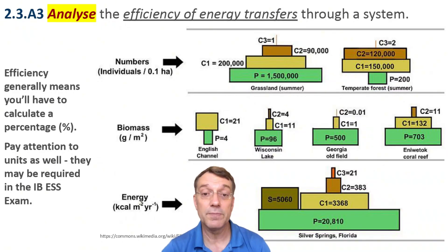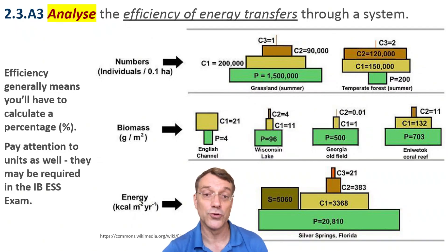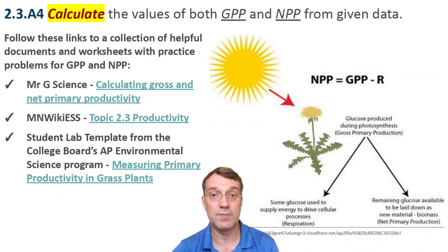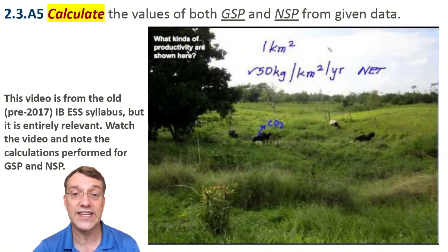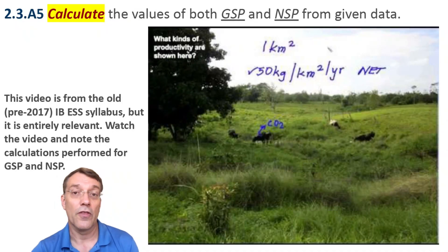Analyzing the efficiency of energy transfer typically requires calculating percentages. These ecological pyramids show how biomass and energy decrease at higher trophic levels. In the energy pyramid, only 16% of producer energy reaches primary consumers at the next level. To calculate gross primary productivity and net primary productivity — GPP and NPP — use the formula NPP = GPP minus R. Gross secondary productivity and net secondary productivity can also be calculated: GSP equals food eaten minus fecal loss, and NSP equals GSP minus R for respiration. Understanding these calculations helps quantify energy flow through ecosystems. The formulas are straightforward — the trick is recognizing which data point goes with which abbreviation.